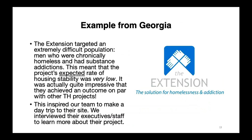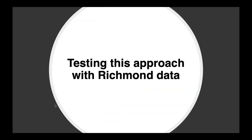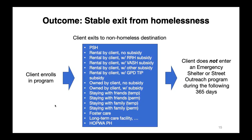I tested this recently with data from Richmond, Virginia. The outcome I defined as a stable exit from homelessness meant: a client enrolled in a program, the client exited to some kind of non-homeless destination, and the client did not enter an emergency shelter or street outreach program during the following year. Even if they went to a temporary housing situation like staying with friends temporarily, as long as they satisfied those two conditions, I considered that a stable exit from homelessness.